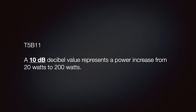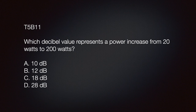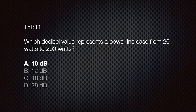We need to know that a 10 dB value represents a power increase from 20 watts to 200 watts. We memorized that a 10 dB increase is 10 times the power. We can find our increase by dividing 200 watts by 20 watts, giving us 10 times the power — therefore a 10 dB increase. The exam question is: which decibel value represents a power increase from 20 watts to 200 watts? A) 10 dB, B) 12 dB, C) 18 dB, or D) 28 dB. The answer is A, 10 dB.